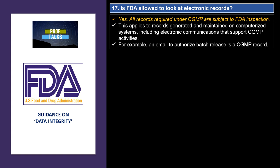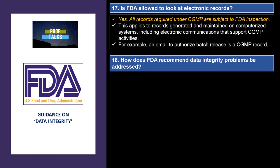Is FDA allowed to look at electronic records? Yes. Whatever CGMP records are available, FDA is allowed to look at them. This applies to all records generated and maintained on computerized systems, including email communications about quality functions — for example, emails used to authorize the release of a GMP record.